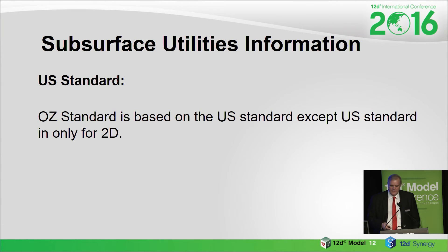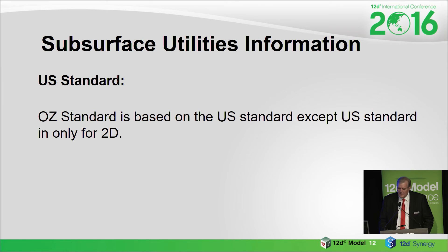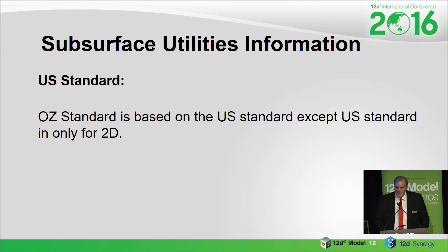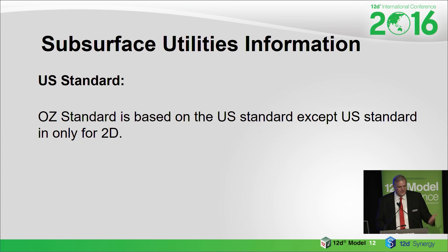This standard didn't come out of nowhere — the US had a standard, and there were talks about it here. The US standard has nothing about 3D — when asked, the response was '3D's too hard, none of our people could provide for 3D.' But in Australia and New Zealand they got a bit smarter and added all the 3D information as well. What's the use of knowing where things are if you don't know where they are in 3D?